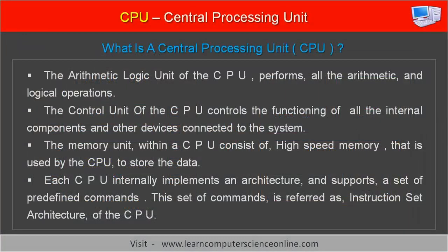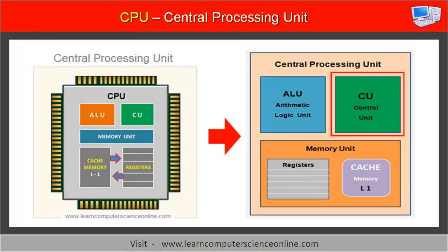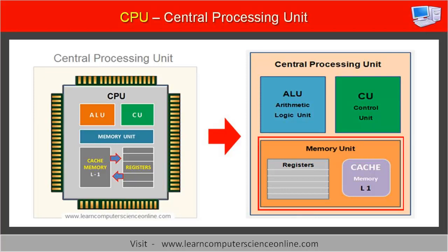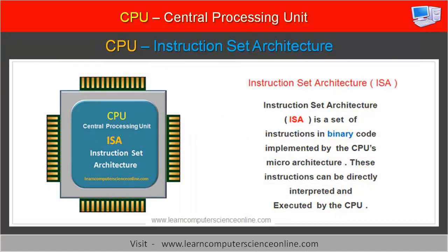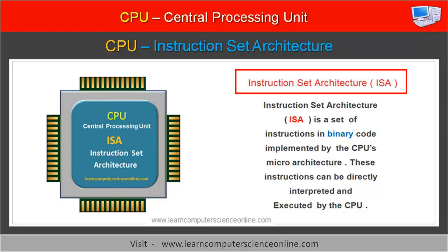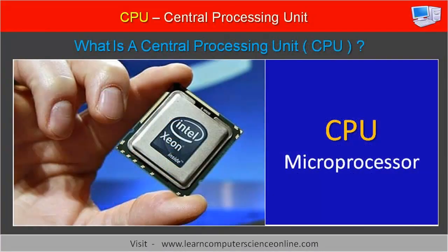The arithmetic logic unit of the CPU performs all the arithmetic and logical operations. The control unit of the CPU controls the functioning of all the internal components and other devices connected to the system. The memory unit within the CPU consists of high-speed memory that is used by the CPU to store the data. Each CPU internally implements an architecture and supports a set of pre-defined commands. This set of commands is referred to as the instruction set architecture of the CPU.